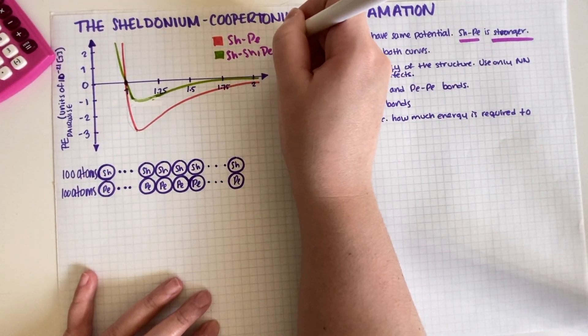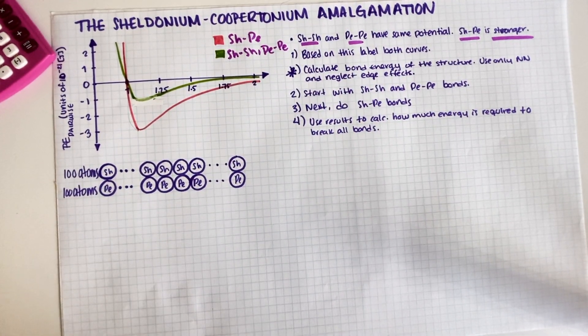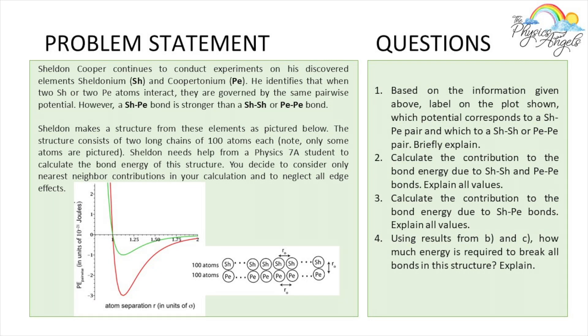All right, so now let's put the problem back on the screen. Sheldon makes a structure from these elements as pictured below. The structure consists of two long chains of 100 atoms each—note only some atoms are pictured. Sheldon needs help from Physics 7A students to calculate the bond energy of this structure.